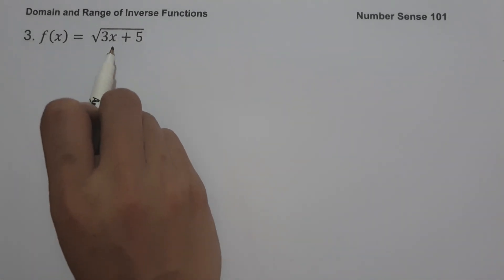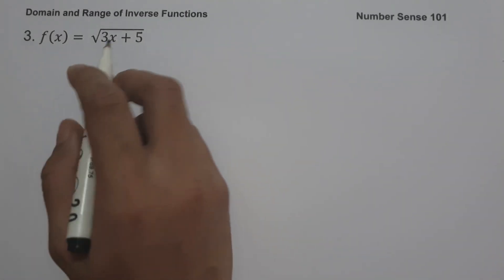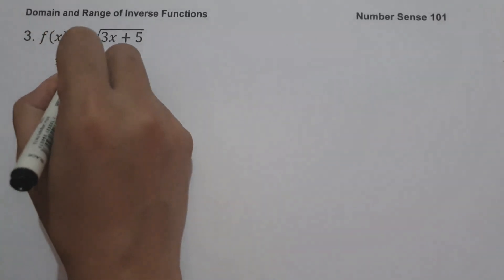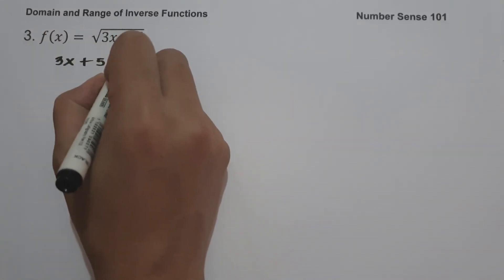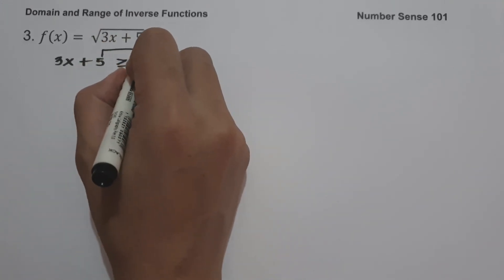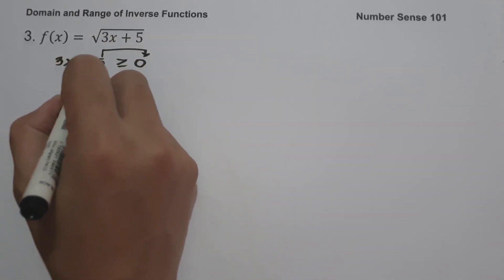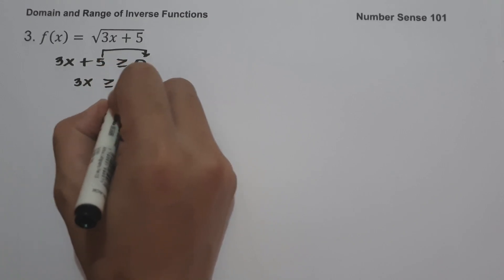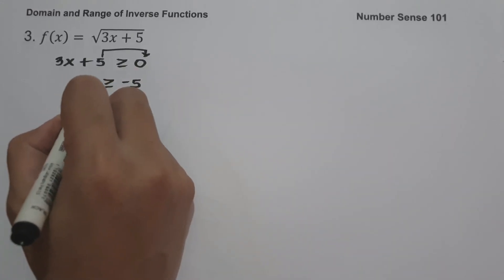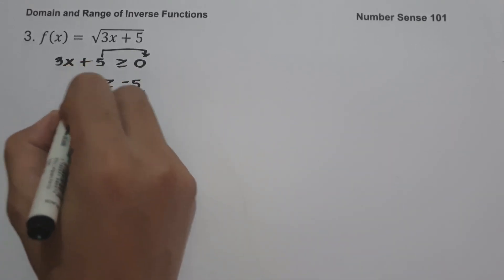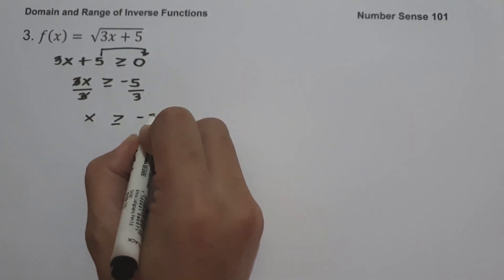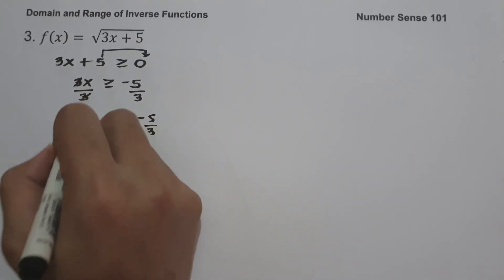Setting 3x plus 5 greater than or equal to 0, we move 5 to get 3x greater than or equal to negative 5. Dividing both sides by 3, we get x is greater than or equal to negative 5 over 3.